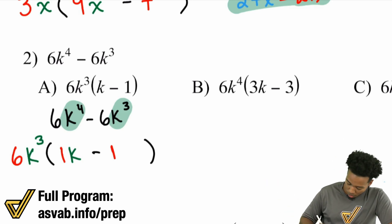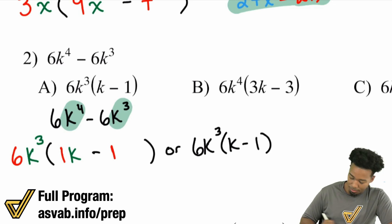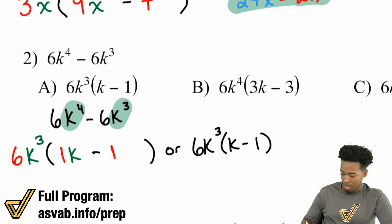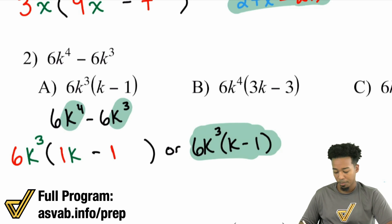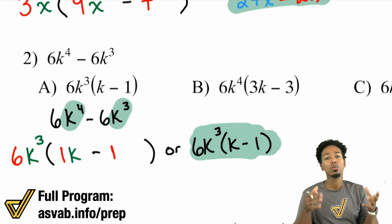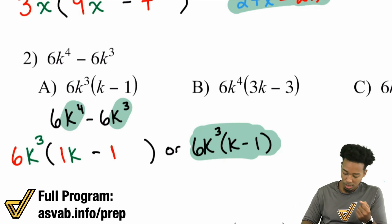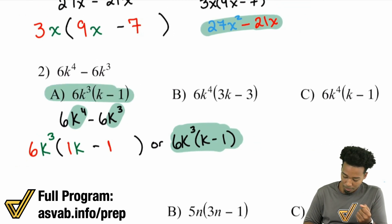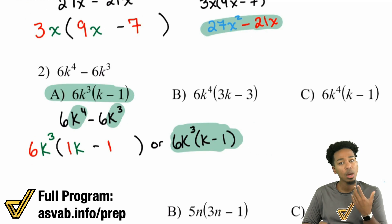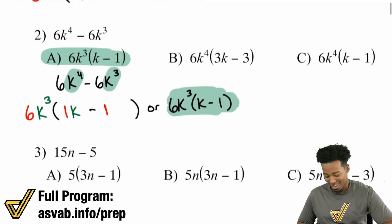Parentheses, 1k minus 1. Or the other way to read it, is simply 6k cubed, k minus 1. Just like that, and there is your answer. Again, factoring is the opposite of distributing. What can you divide out of all the terms? What can you divide out? And so there it is. That's answer choice A. Now allow me to do another example to really help you get the ropes of this.